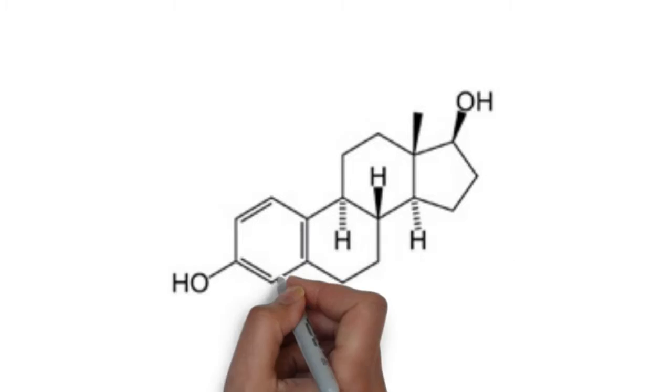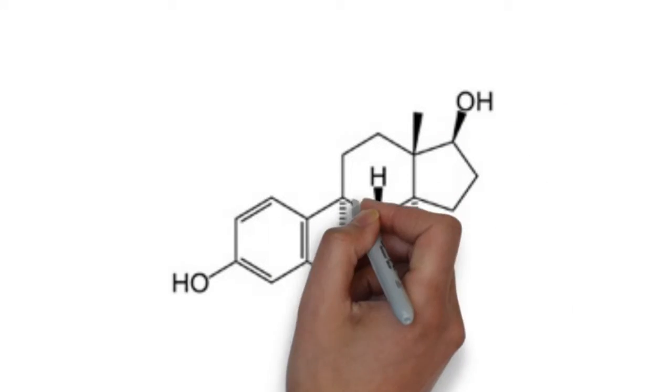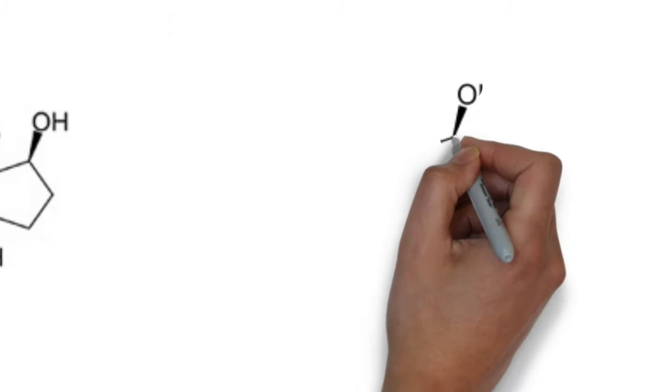According to researchers, there are three stages of love: lust, attraction, and attachment. And each stage is driven by different hormones and chemicals.